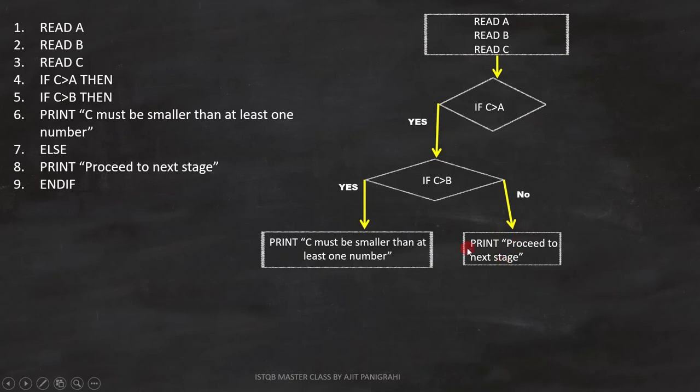Line number 9 is end if. Here, the condition on line number 5 ends, and we can close it in flowchart like this. Line number 10 is else. This else is for condition on line number 4, because the condition on line number 5 is already closed by end if at line number 9.